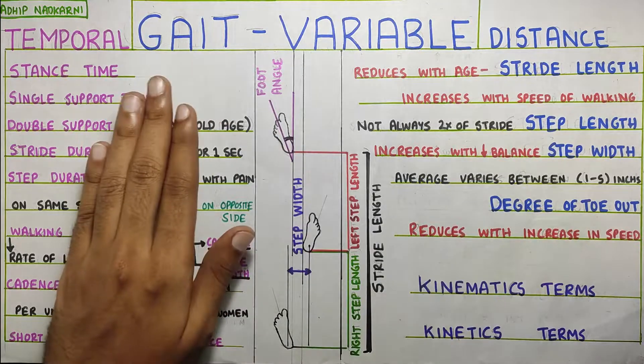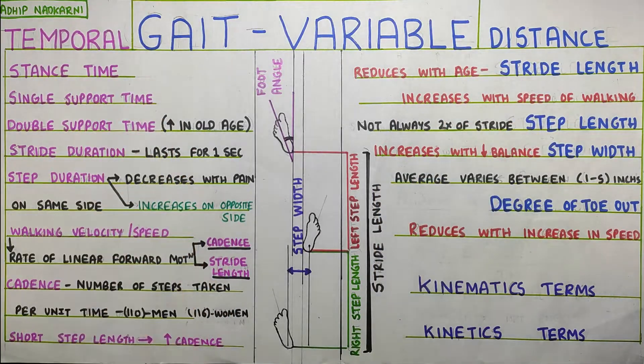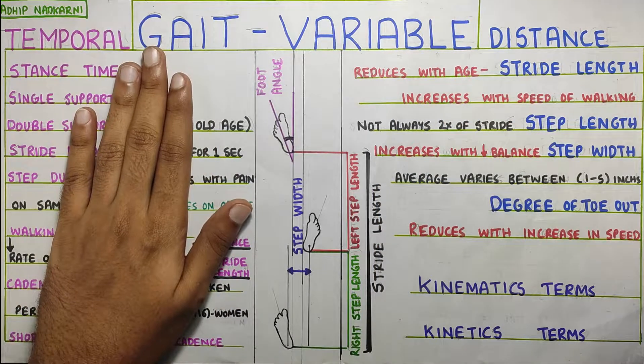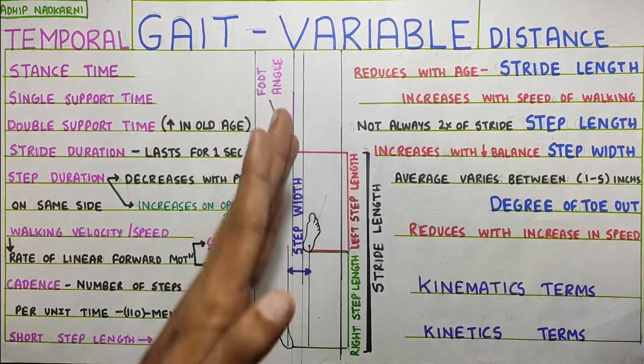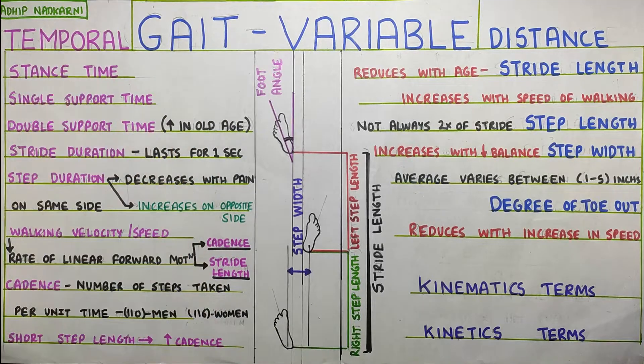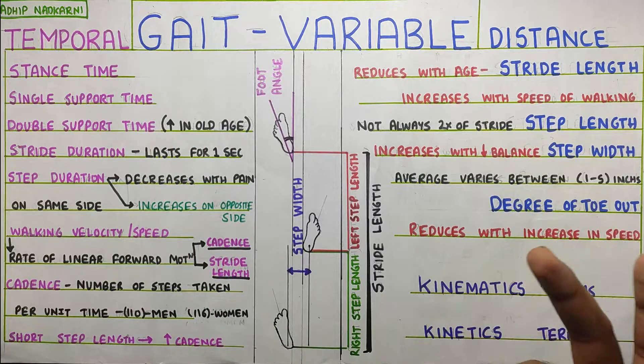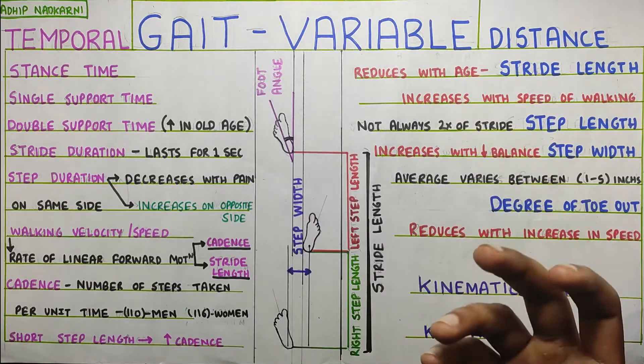And then finally, is the degree of toe out. How much your foot is externally rotated, I would say. Not really externally rotated, but how much is the angle between this over here, the second metatarsal and the perpendicular. How much of your foot is going out? That is the degree of toe out. This will reduce as you keep increasing your speed. That's what was seen.